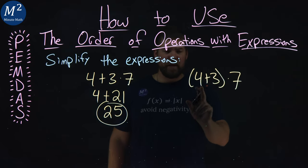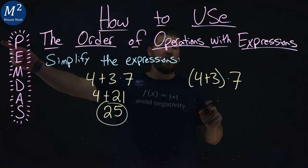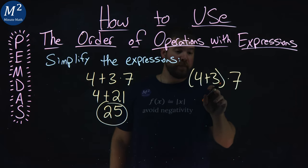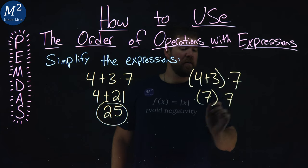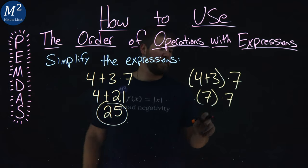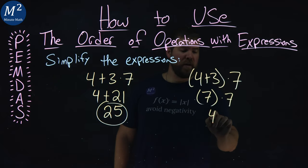Now the second expression here, parentheses come first. So what's inside the parentheses is addition: 4 plus 3. 4 plus 3 is 7, and what's left here is just 7 times 7, the multiplication. 7 times 7 is 49.